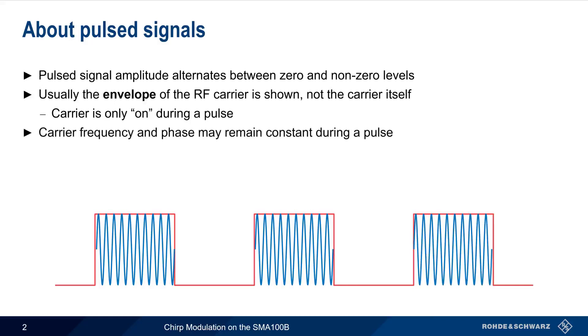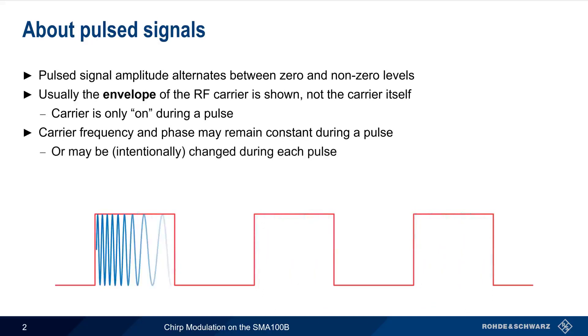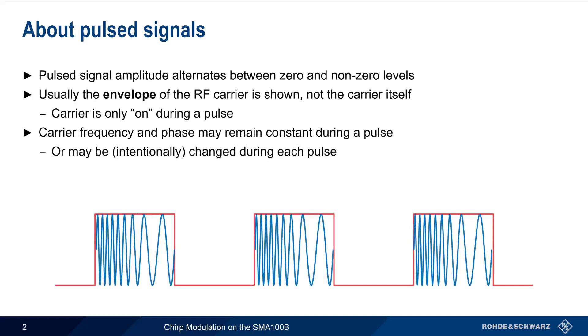When the carrier is on, its frequency and phase may remain essentially constant, but there are also cases where we intentionally change the frequency and or phase of the carrier during each pulse. This is called pulse modulation, or sometimes modulation on pulse.